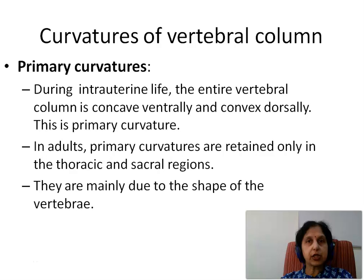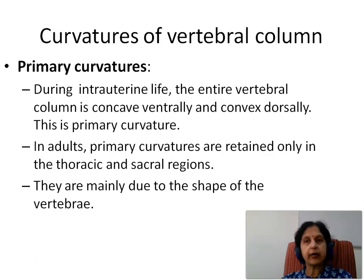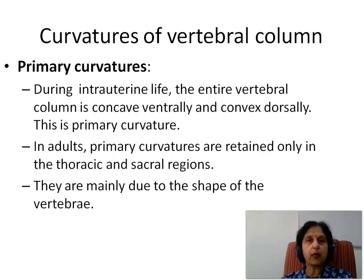Let us see the curvatures of the vertebral column. Primary curvatures: during intrauterine life, the entire vertebral column is concave ventrally and convex dorsally, and this is the primary curvature. In adults, primary curvatures are retained only in the thoracic and sacral regions. They are mainly due to the shape of the vertebral bodies.